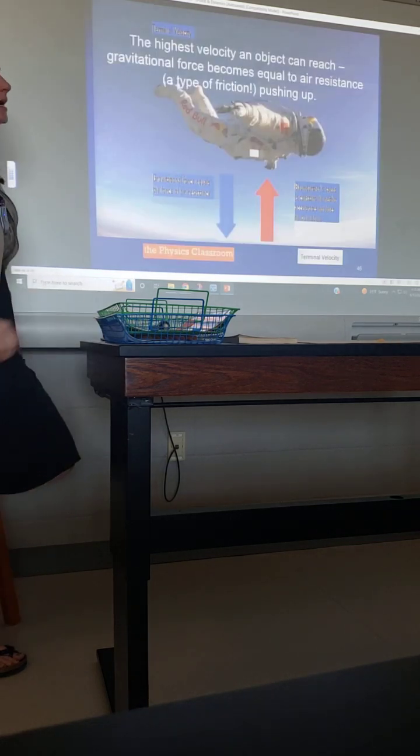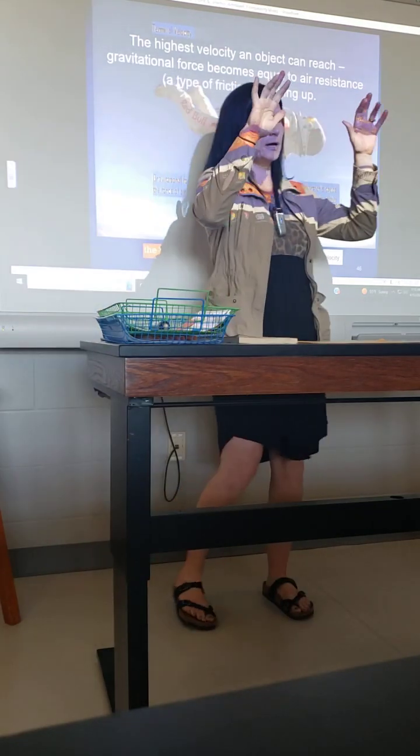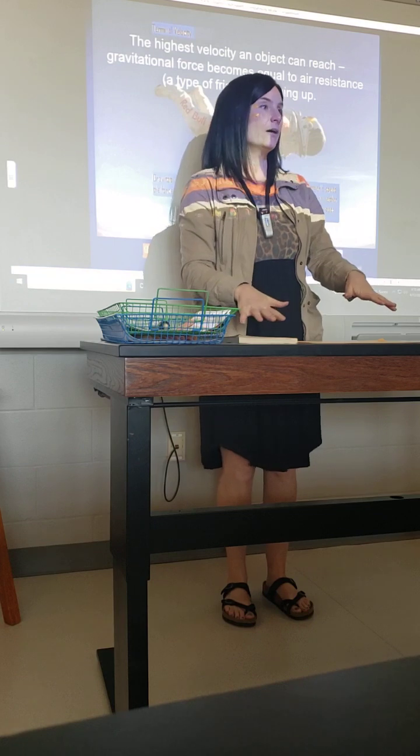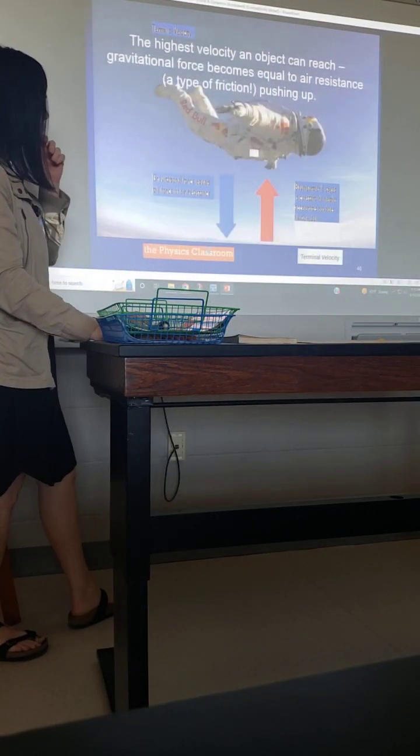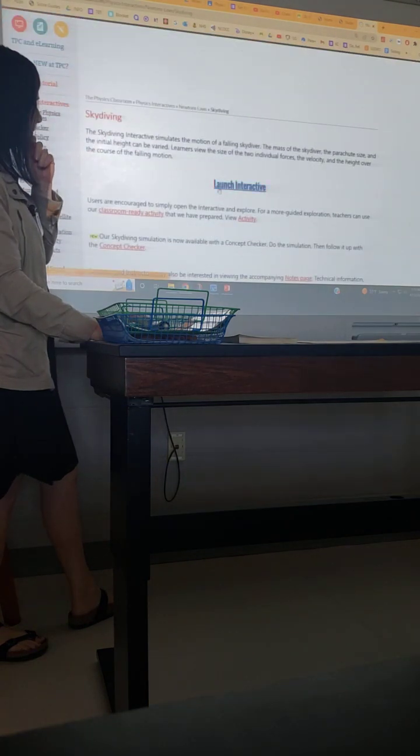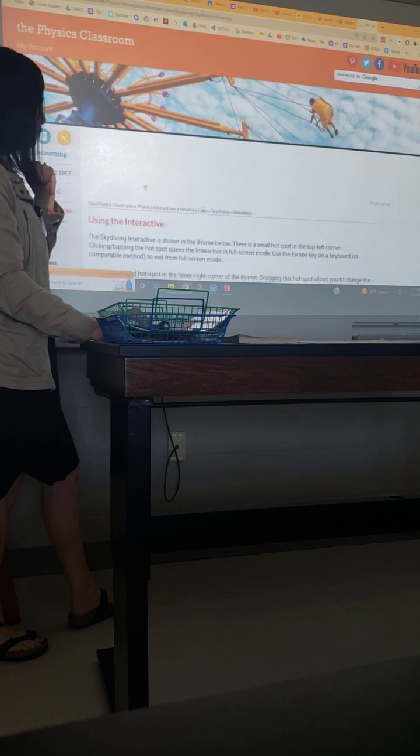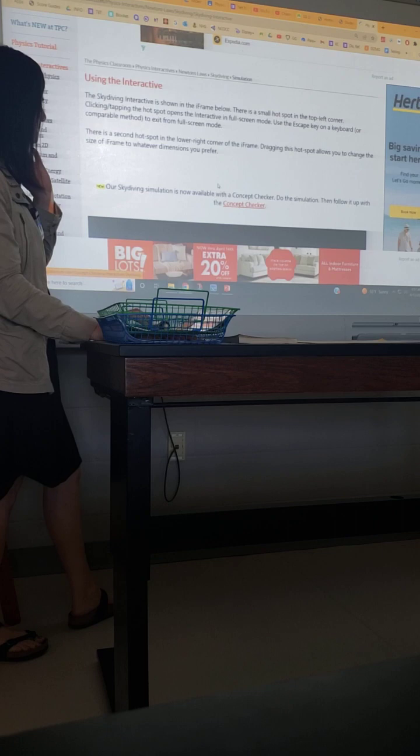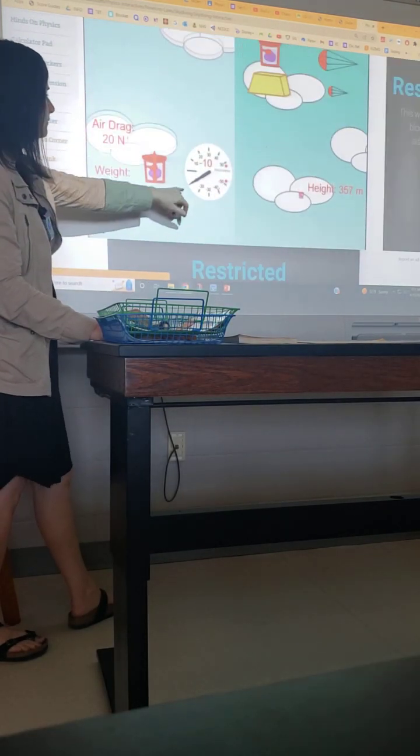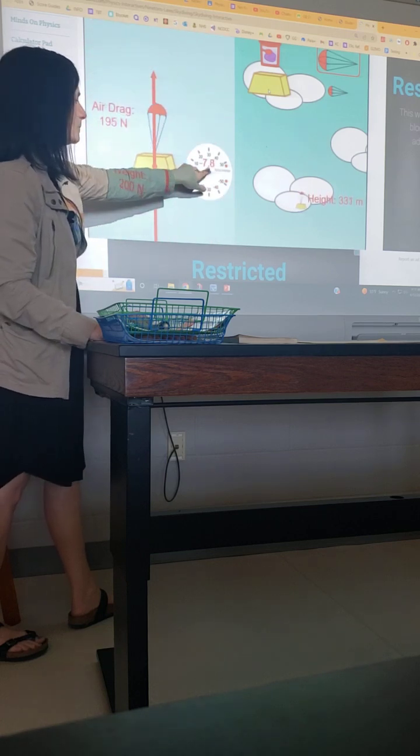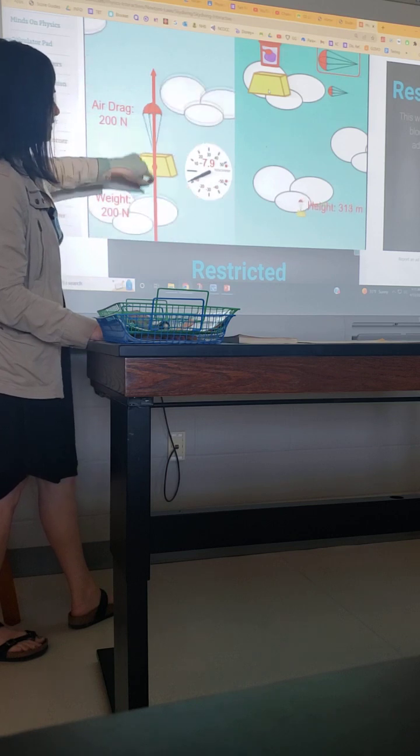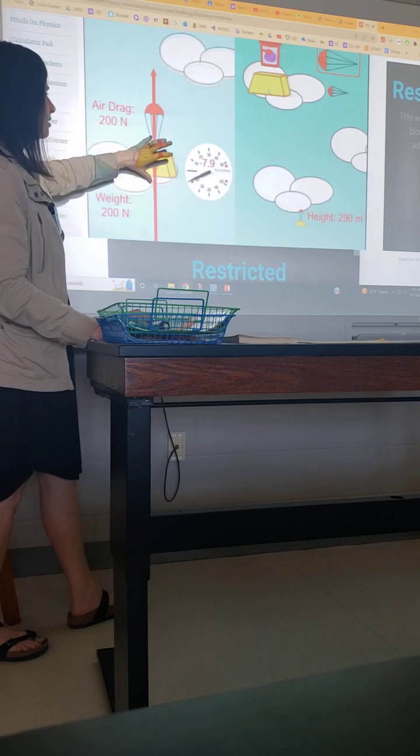So there's something called terminal velocity. And actually, you guys are going to get to watch a Mythbuster tomorrow on terminal velocity. And there is a point that an object will reach where the rate of gravity pulling down is going to be balanced by the air resistance. So remember when we looked at that skydiver interactive, that while the forces were unbalanced, while the forces are unbalanced, if I change them, it's going to keep accelerating or have a changing velocity.